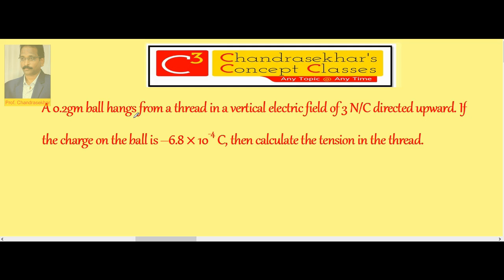A 0.2 gram ball hangs from a thread in a vertical electric field of 3 N per coulomb directed upwards. If the charge on the ball is -6.8 × 10⁻⁴ coulomb, then calculate the tension in the thread.